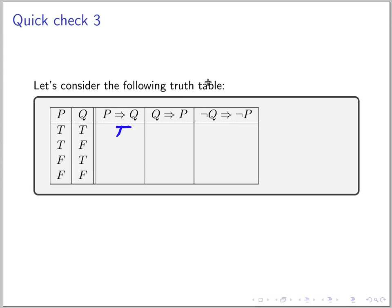All right, so let's view this table. This is P implies Q. So if P is true and Q is false, then this is false. The other two cases are vacuously true, so it's true and true.